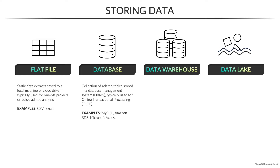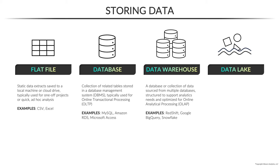Common database options include MySQL, Amazon RDS, Microsoft Access or SQL Server, and many more. A data warehouse, on the other hand, is a database or collection of data sourced from multiple databases that's typically structured to support specific analytics needs and is optimized for online analytical processing, or OLAP.